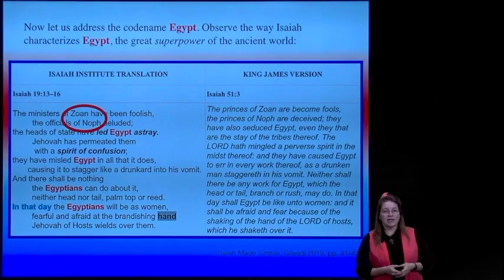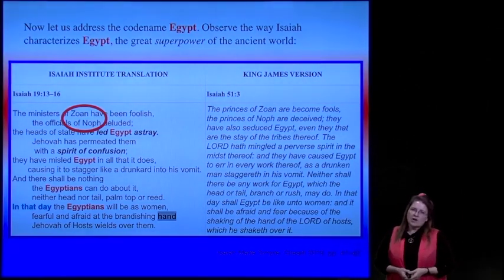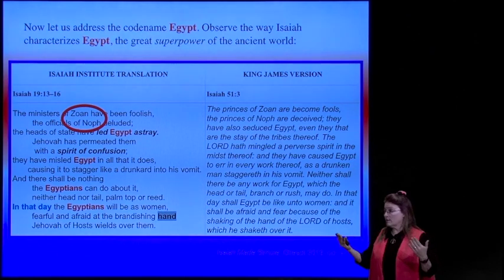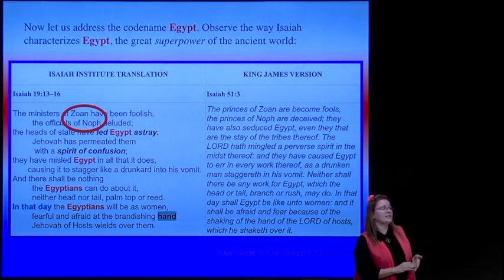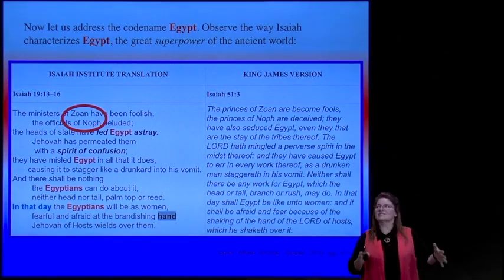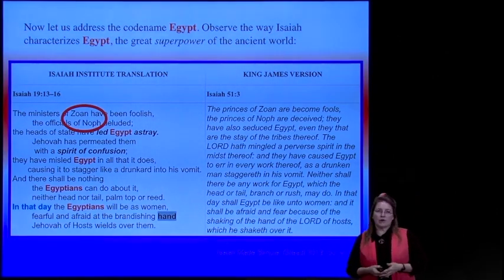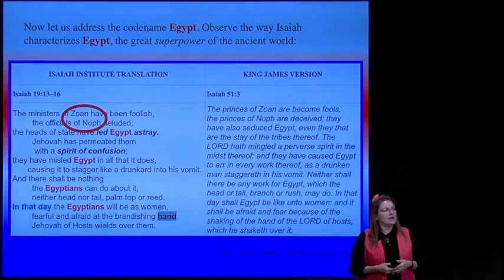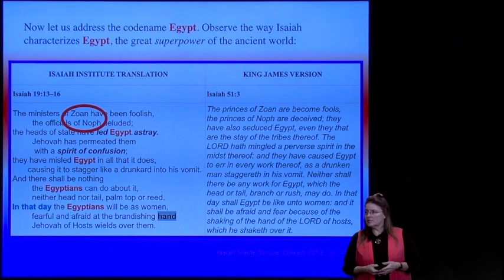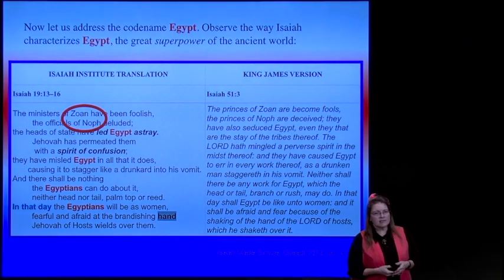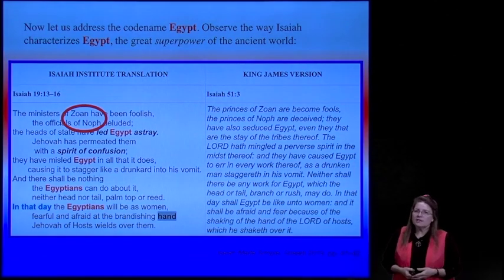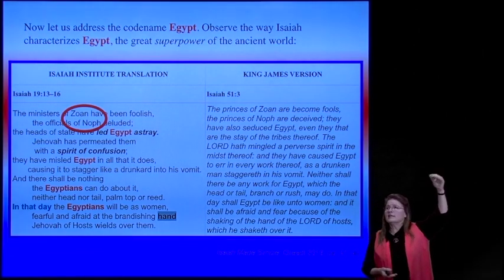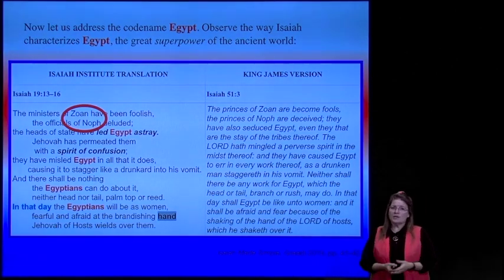If we go into Isaiah Illustrated, we can get a definition of Zoan and Noph, and we find that would be similar to Washington D.C.—the political centers of Egypt in the ancient metaphor. The heads of state have led Egypt astray. Jehovah has permeated them with a spirit of confusion. They have misled Egypt in all that it does, causing it to stagger like a drunkard to his vomit. And there shall be nothing the Egyptians can do about it—neither head nor tail, from leaders of society down to common civilians.